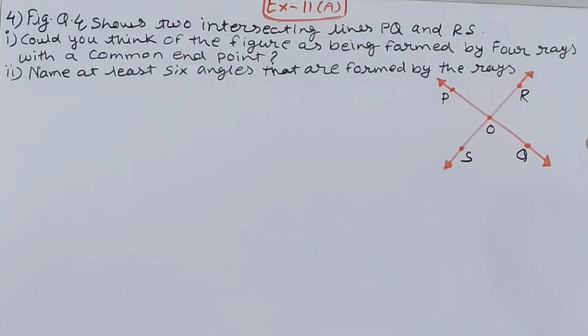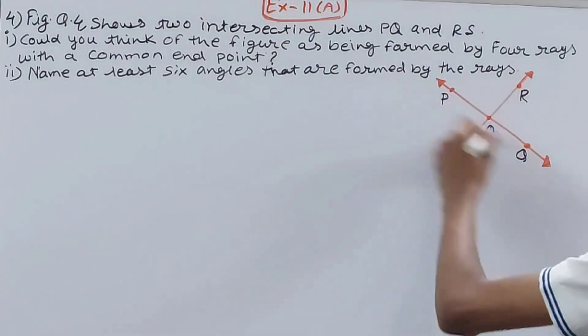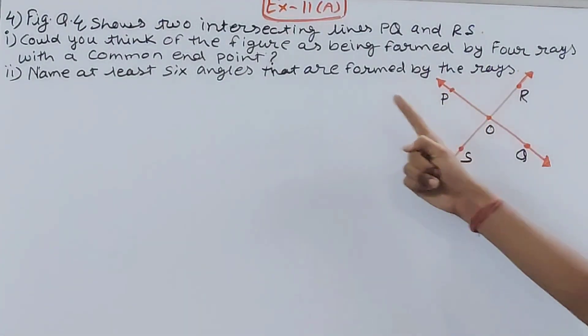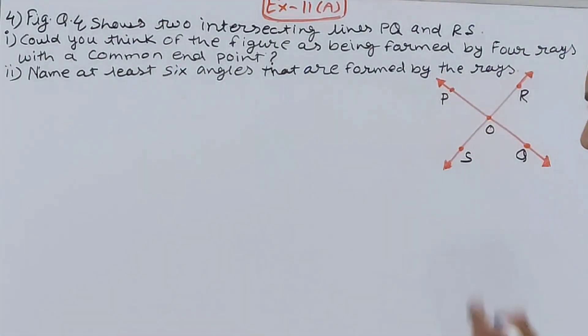So PQ and RS, two intersecting lines. Now the first part of this question asks: could you think of the figure as being formed by four rays with a common endpoint? Let's see, this is a figure formed by four rays here and here, with a common endpoint.